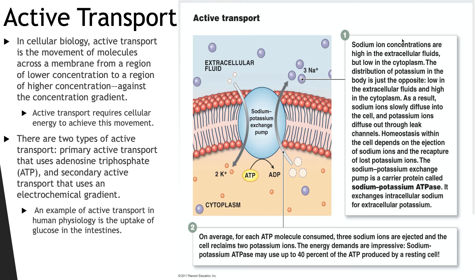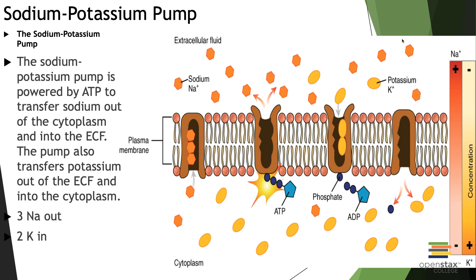Active transport is the transport across the membrane that utilizes ATP. There are two types: primary active transport uses ATP directly, and secondary active transport uses an electrochemical gradient. Because these processes require ATP, they typically move substances against their concentration gradient — from a lower concentration to a higher concentration, moving more of a substance into the cell. An example is the sodium-potassium pump, which will be very important as you move through this program and will be revisited in the musculoskeletal unit.